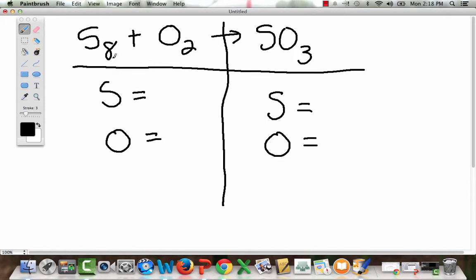So, we have the subscript of 8. So, we know we have 8 sulfur over here. And we also know we have 2 oxygen on the left side, or on your reactant side. Over here on the products, we know there's no subscript here. So, this is going to be a 1. And we also know that oxygen has its own subscript, which is a 3.